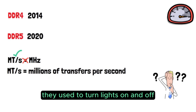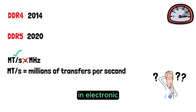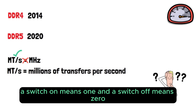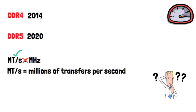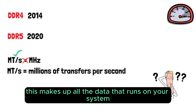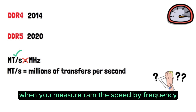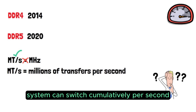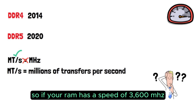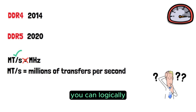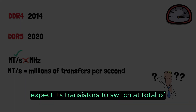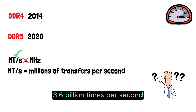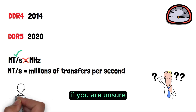RAM modules are made up of transistors that act like switches. They reflect ordinary switches used to turn lights on and off. In electronics, a switch on means one and a switch off means zero. This makes up all the data that runs on your system. When you measure RAM speed by frequency, you're measuring how fast those transistors can switch cumulatively per second. So if your RAM has a speed of 3600 MHz, you can expect its transistors to switch 3600 million times per second.